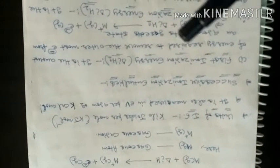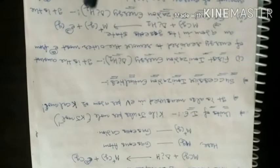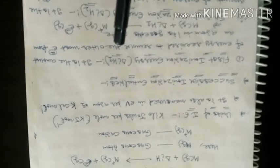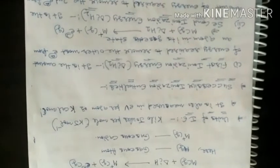Next topic: successive ionization enthalpy. The first ionization enthalpy is the minimum amount of energy required to remove one electron from a metal atom in its gaseous state. That energy is called the first ionization enthalpy, represented as delta I H1.